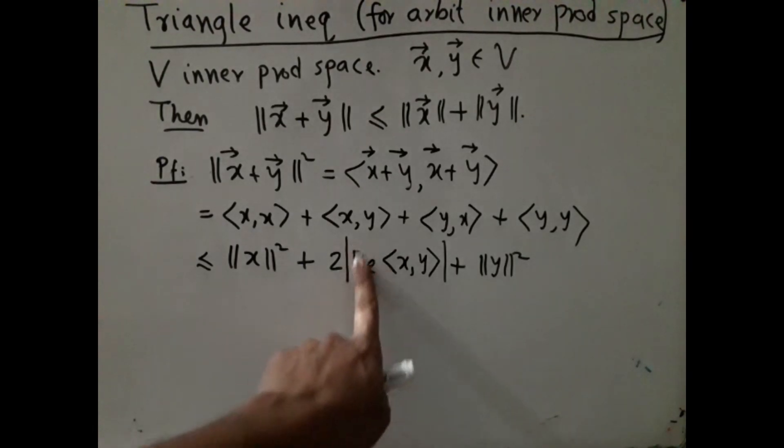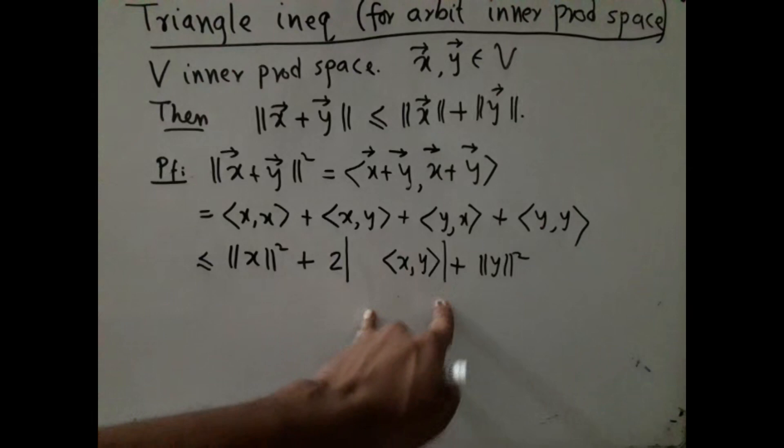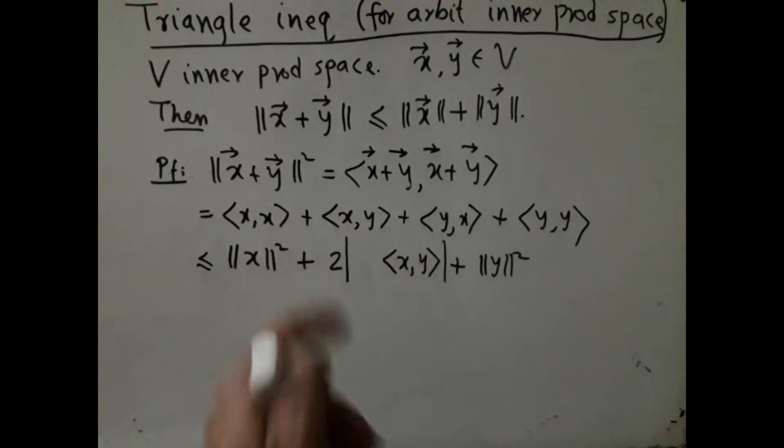So we shall simply remove the Re from here. So earlier it was absolute value, now it has become modulus. Now once I have this, I can use Cauchy-Schwarz inequality, because I know that this is less than or equal to product of the two lengths. So this is less than or equal to everything else remaining as it is, but this fellow becomes twice ||x|| times ||y||.